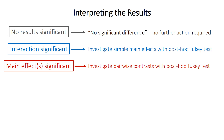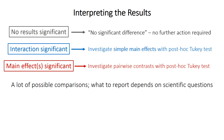If the interaction isn't significant, you can look at the regular main effects reported in the main output. You may also want to investigate pairwise contrasts using a Tukey test, as you would with a regular one-way ANOVA. In factorial ANOVA, there can be a lot of possible comparisons, especially when factors have more than two levels or when there are three or more independent variables. So factorial ANOVA can get really complex.